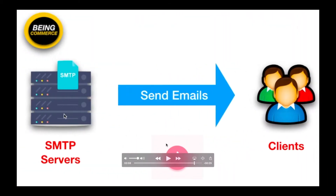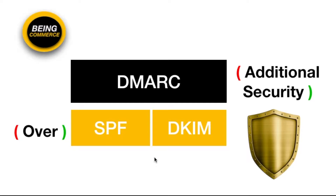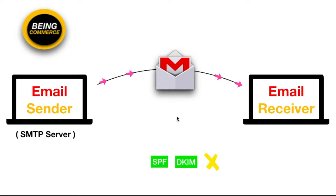After you watch those two videos, you can easily understand what SPF and DKIM are. Now let me give you a simple scenario. There is one email sender and one email receiver. The email sender sends the email, and the email receiver — who can be a customer, client, or anyone — receives it.